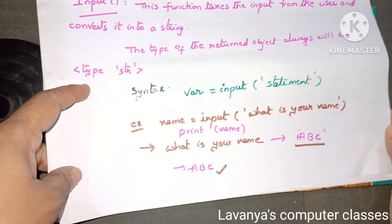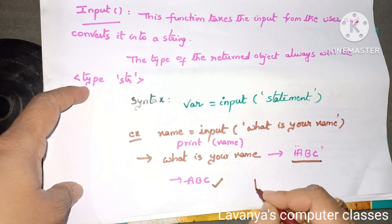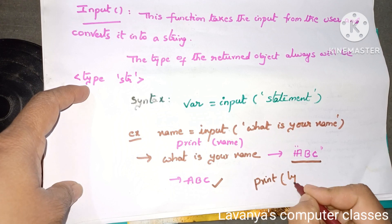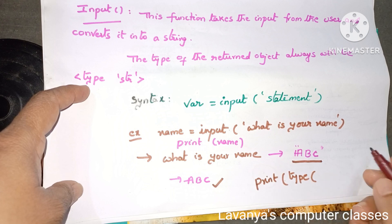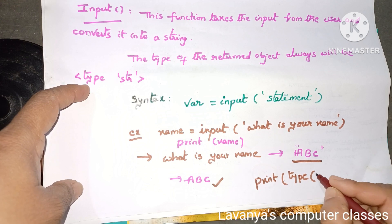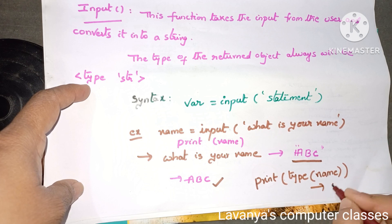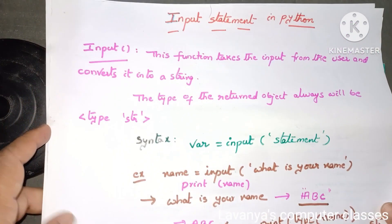If I want to check the data type of the variable name, I use the type function: print(type(name)). The answer printed is STR, which means it is a string data type.